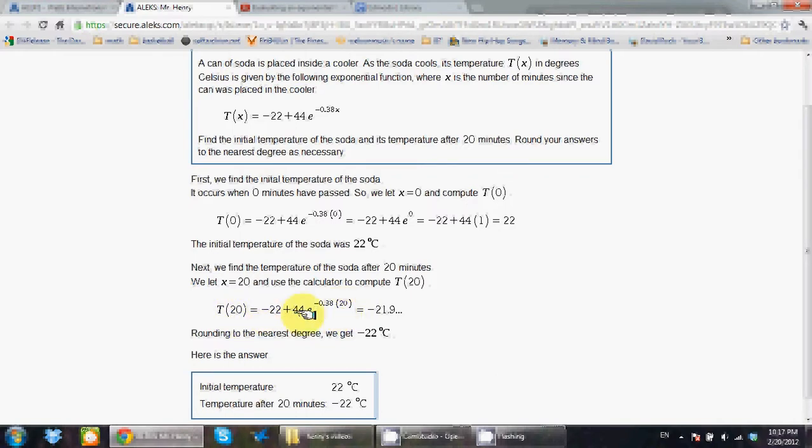Make sure you punch in the negative number. If you leave it out, your answer will not be correct. So type this in your calculator and you should be getting, rounded up, you will get negative 22 degrees Celsius.